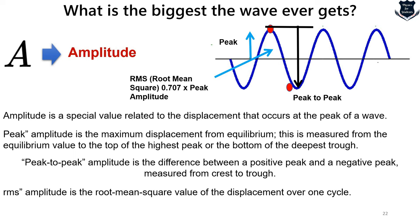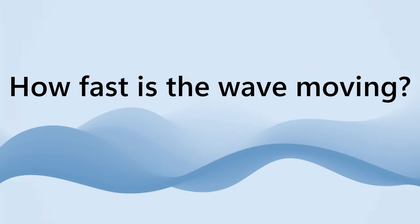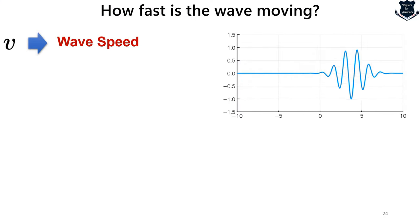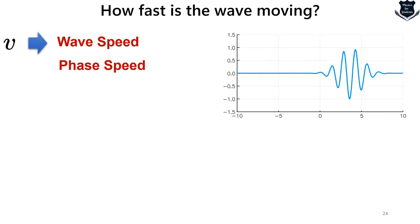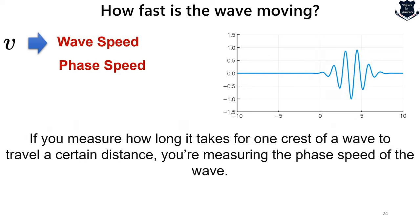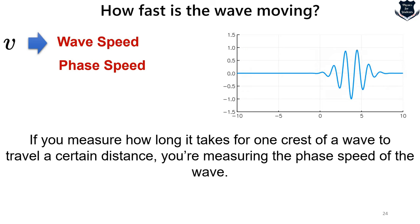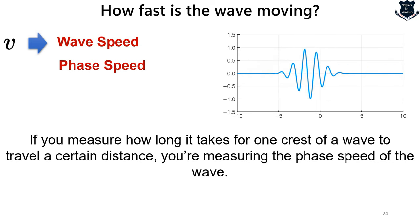The next question: how fast is the wave moving? This is denoted by V and called wave speed, also known as phase speed. When people refer to wave speed they usually mean phase speed — how fast a given point on a wave moves. For example, measuring how long it takes for one crest to travel a distance gives you the phase speed. There is also something called group speed, which measures a group of waves, but we will not go into that now.